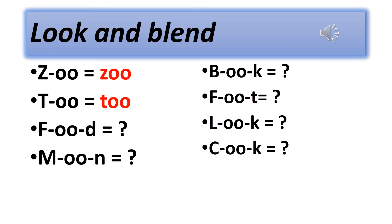Now look and blend the sounds. Example: Z, oo — zoo. T, oo — to.